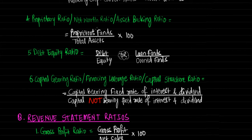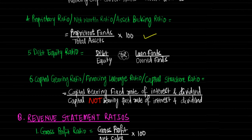Next ratio is proprietary ratio, also called net worth ratio or asset backing ratio. It is calculated as proprietor's funds upon total assets into 100. Proprietor's funds include paid up preference share capital, paid up equity share capital, capital reserve, revenue reserves, security reserve, profit and loss account minus accumulated losses and fictitious assets. Total assets include fixed assets, investments, current assets, etc. This ratio determines to what extent total assets are financed by proprietors, and compares proprietor's funds with total assets and total liabilities. Normally this ratio should be 65% to 75% but it differs from business to business.